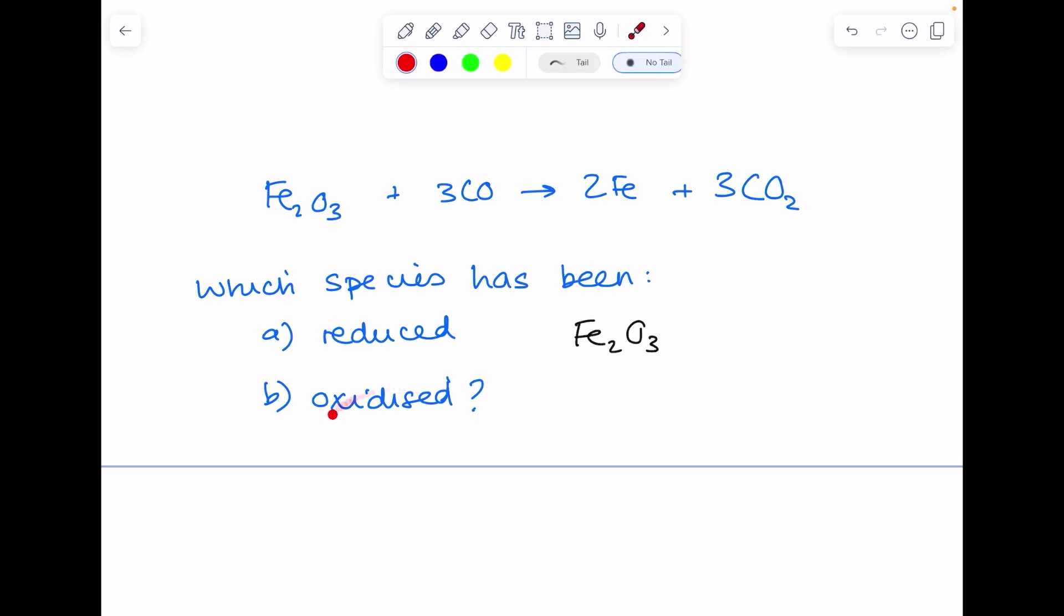Which species has been oxidized? Which species has gained oxygen? Again, look, the carbon monoxide is now carbon dioxide. So that is carbon monoxide.